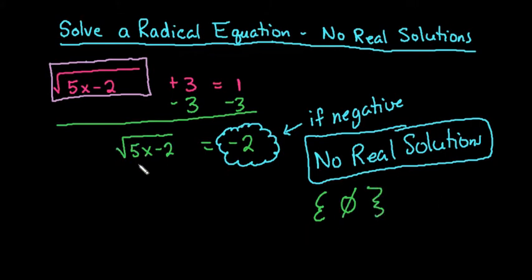So any time you have a square root equation that ends up equaling a negative value, then there is no real solution.